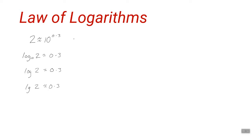We want to generalise this expression. We said 2 is approximately equal to 10 to the power of 0.3, then we applied the log function to both sides: log of 2 is approximately equal to log of 10 to the power 0.3. Log is defined as the inverse function of 10 to the power of, so applying a function and then its inverse gives back the original input. That means the right-hand side becomes 0.3.